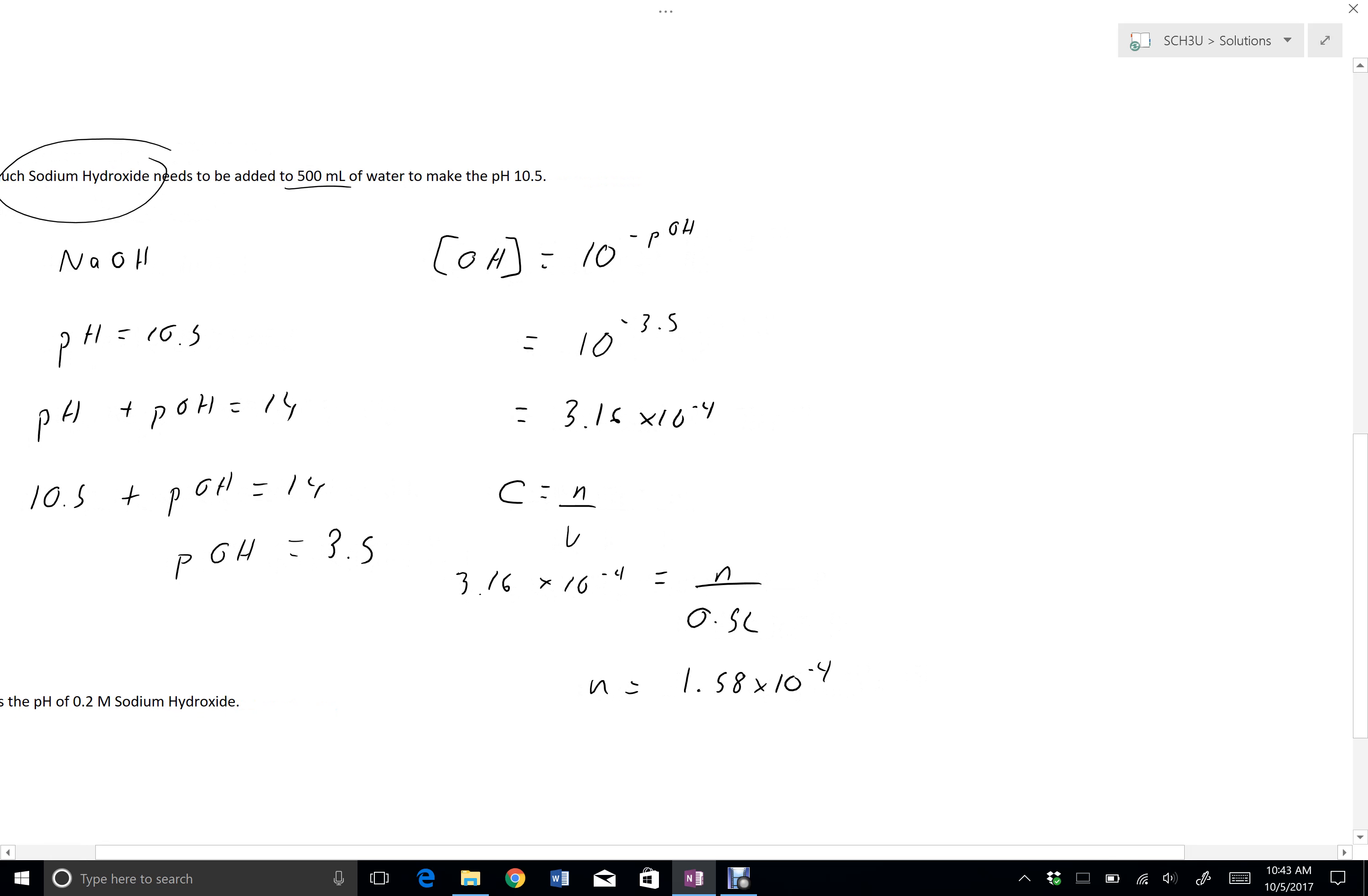And now I can consider my reaction. Sodium hydroxide reacts to dissociate and form sodium and the hydroxide ion, and they're in a 1 to 1 ratio. So that means if I have this many moles of hydroxide, then I have the same amount of sodium hydroxide. So my moles of sodium hydroxide are also 1.58 times 10 to the negative 4.